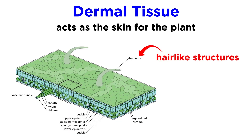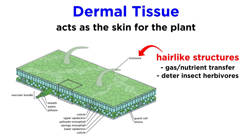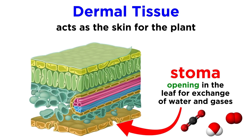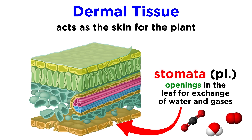Some epidermal cells can specialize to take on hair-like shapes, which help the plant with specific gas and nutrient transfer functions, but these hairs can also be useful in deterring insect herbivores that might try to graze on the plant. A plant also needs some openings in the epidermis in order to let water and gases travel in and out so as to maximize the surface area available for material exchange. These openings are called stomata.